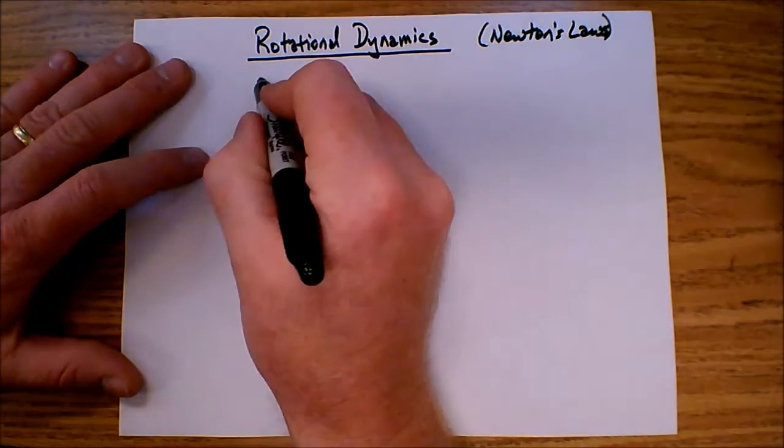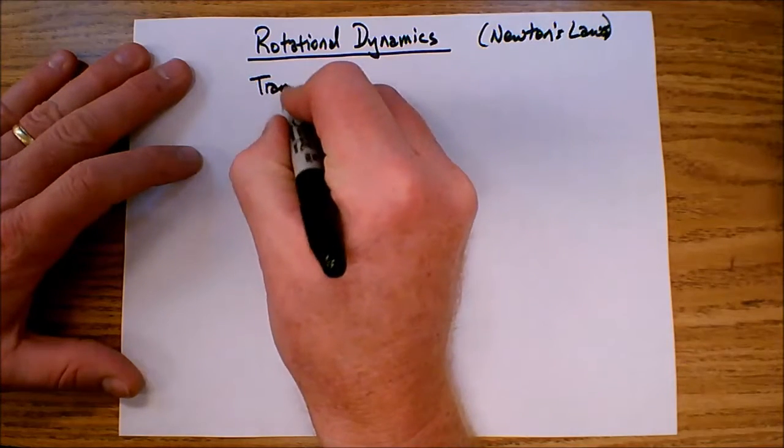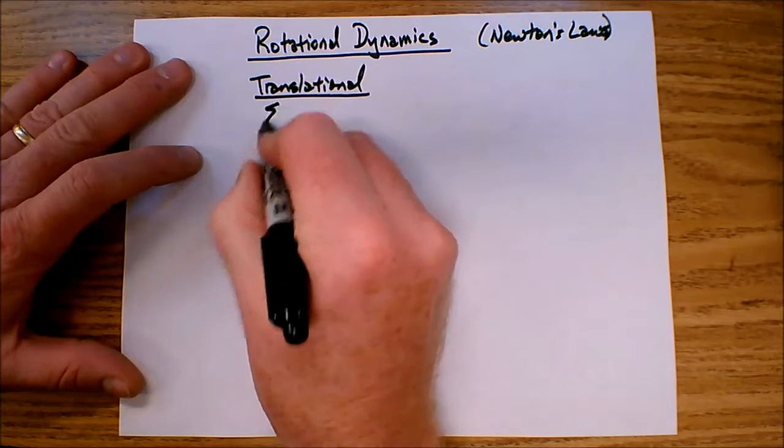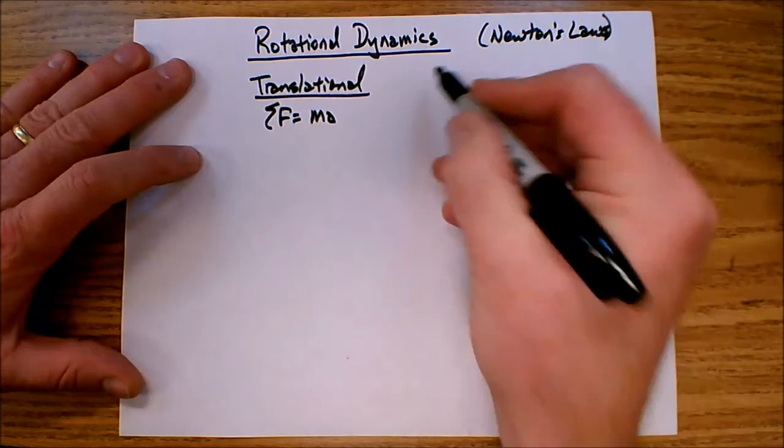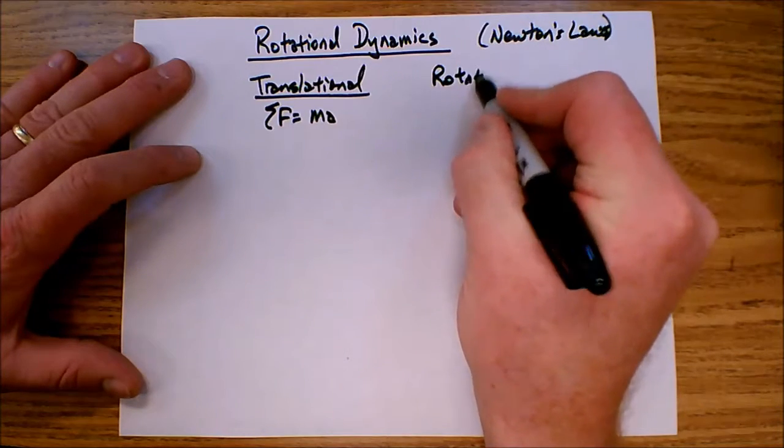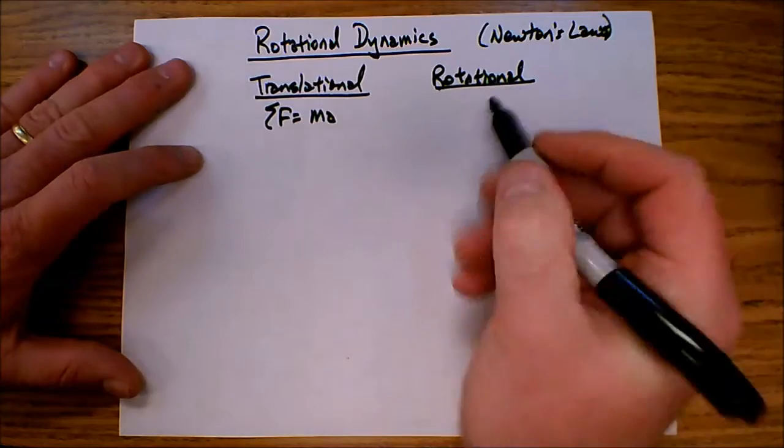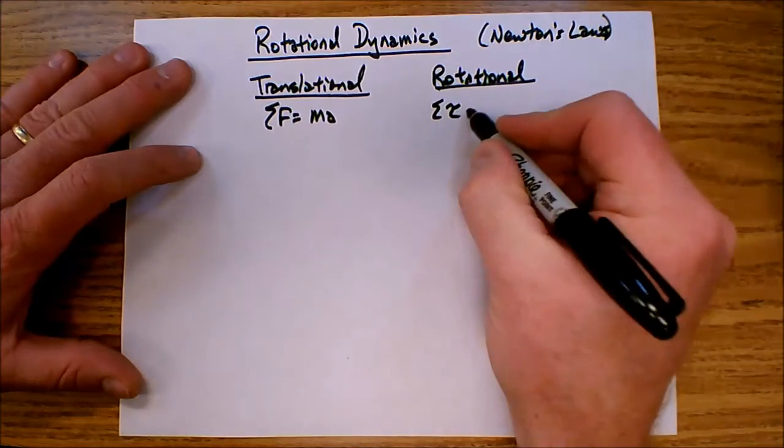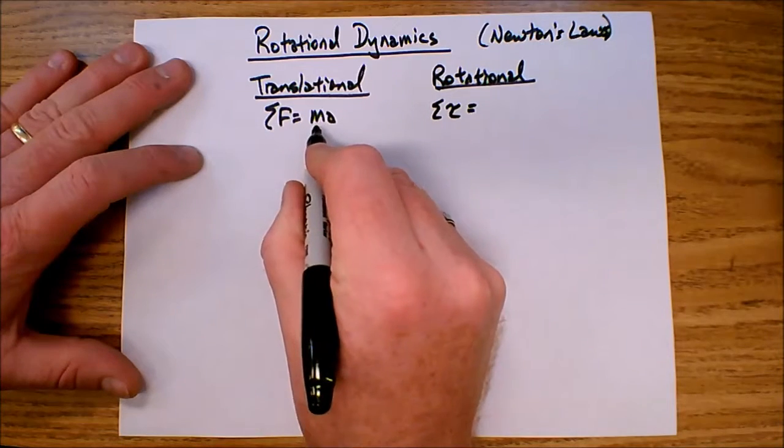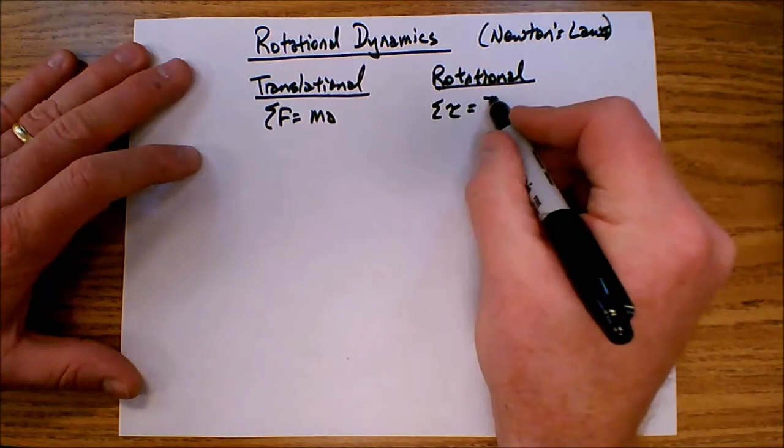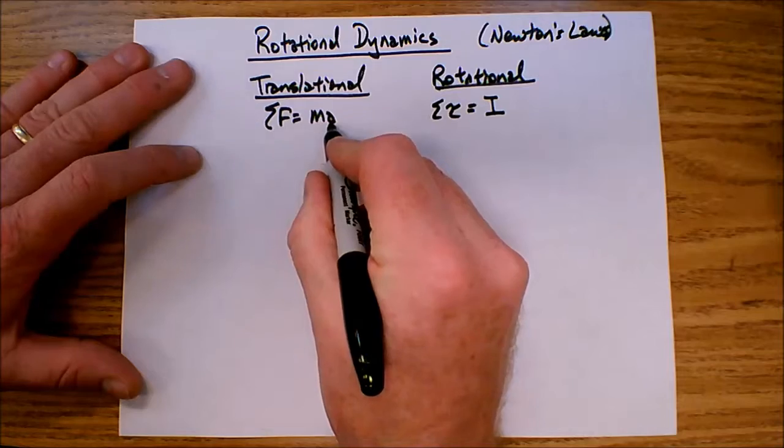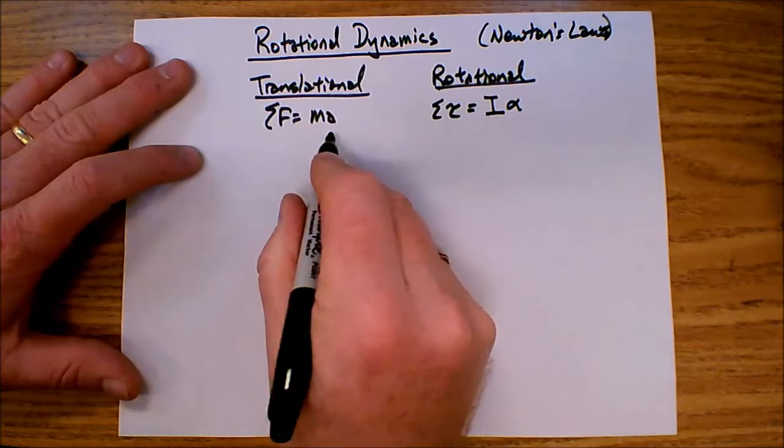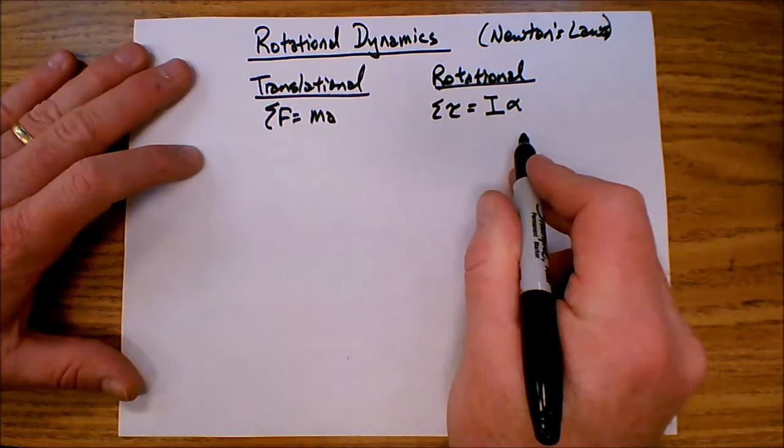Just as Newton's second law for translational motion says that the net force is equal to mass times acceleration, in rotational motion, we have in place of force, we have torque. So the net torque is equal to, in place of mass which is a linear inertia, we have the rotational inertia, and in place of the linear or translational acceleration, we have the angular acceleration. So F equals MA becomes net torque equals I alpha.